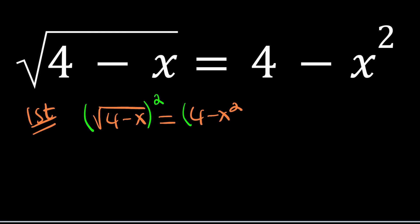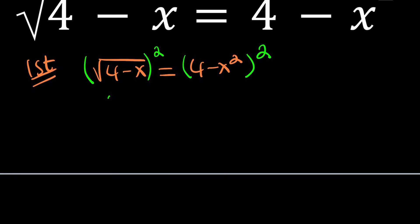Of course, what else can you do? Wait for the second method. Now, once you square both sides, the radical disappears. We end up with 4 minus x. On the right-hand side, we get 16 plus x to the 4th minus 8x squared.